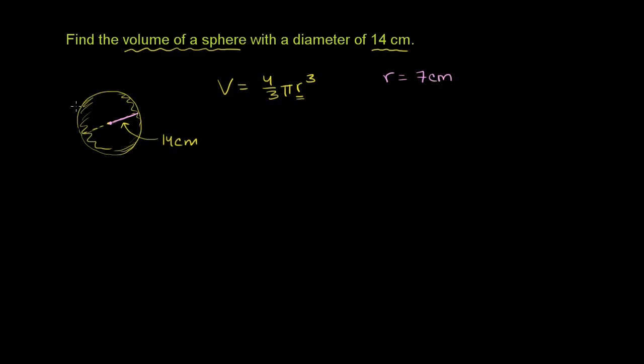And in fact, the sphere itself is a set of all points in three dimensions that is exactly the radius away from the center. But with that out of the way, let's just apply this radius being 7 centimeters to this formula right over here.